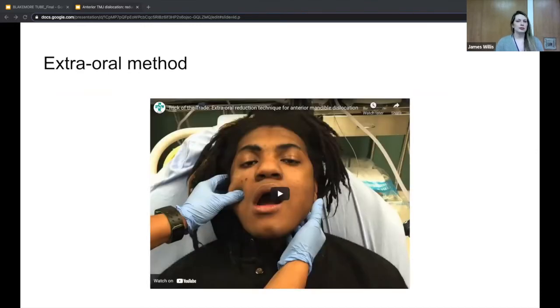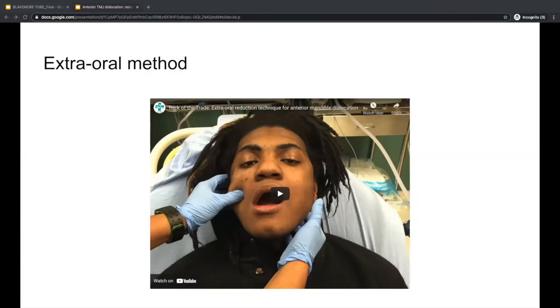The extraoral method is the last one I'll talk about. This is the least invasive method, and it's the most helpful for a dislocation that's unilateral because it reduces one side at a time. You're going to have the patient either sitting upright or supine. On the affected or dislocated side, you're going to put your thumb over the coronoid process and your fingers on the mastoid process. On the opposite non-dislocated side, you're going to put your thumb on the anterior maxilla and your fingers behind the angle of the mandible. Essentially, what you're trying to do is rotate the jaw back into place. You're going to apply posterior pressure on the dislocated side and pull anteriorly on the non-dislocated side to rotate it into place.